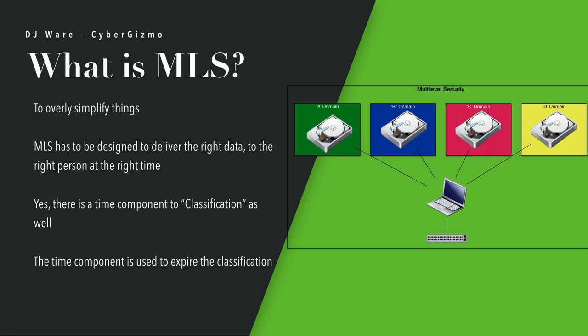Things like financial data, for example, are probably expunged after seven years or archived or removed off the system altogether — a time component is used to expire the classification.